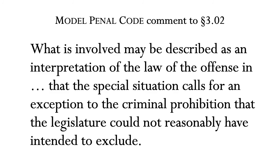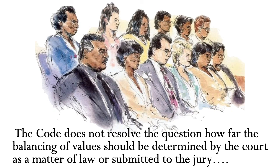My confusion gets worse. The very same comment also says the code does not resolve the question of how far the balancing of values should be determined by the court as a matter of law or submitted to the jury. I'm stumped. It appears that, by default, the balancing of evils is committed to the judgment of some person, and that person is the judge. The judge will decide whether or not the jury will hear a choice of evils defense. And this assumes that the legislature has adopted this provision of the Model Penal Code. Traditionally, an affirmative defense of necessity has been disfavored.